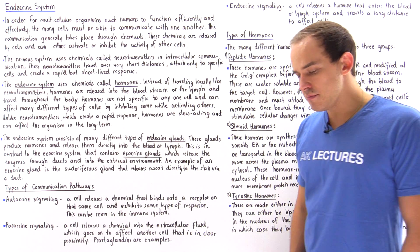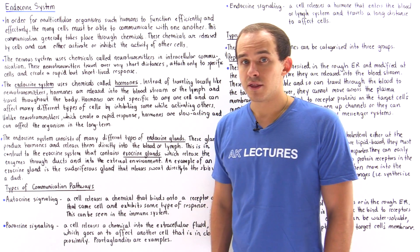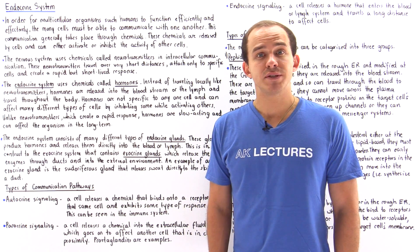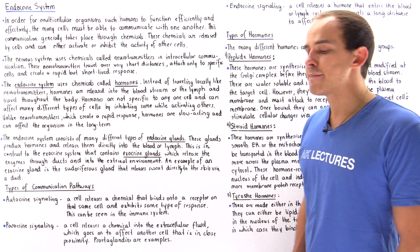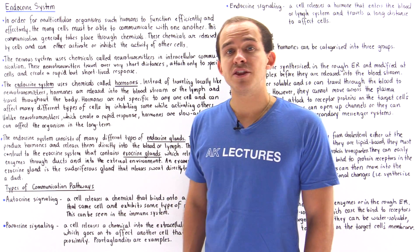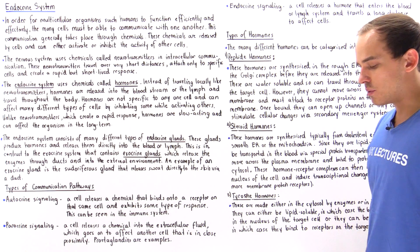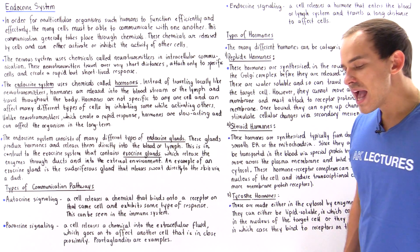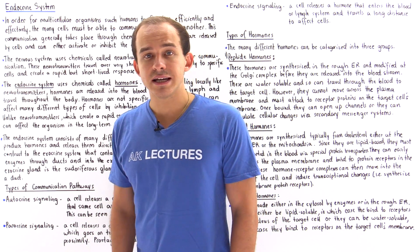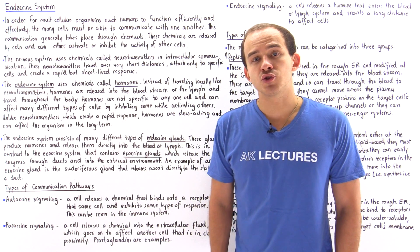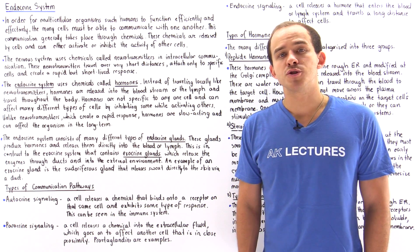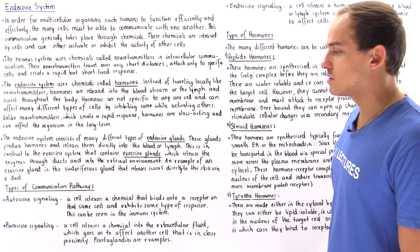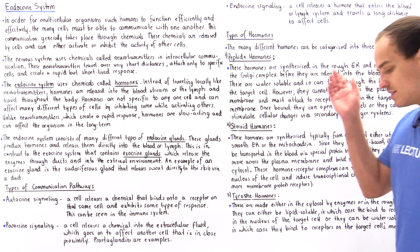Autocrine signaling means that a cell produces a chemical, releases it into the extracellular fluid, and then that chemical binds back onto that same cell that released it, creating some type of change. Examples of this will be seen when we discuss the immune system. The second type is paracrine signaling, where a cell creates a chemical, releases it into the extracellular fluid, and that chemical travels to nearby cells — those found in close proximity — and affects them. One example of such a chemical is the prostaglandin.